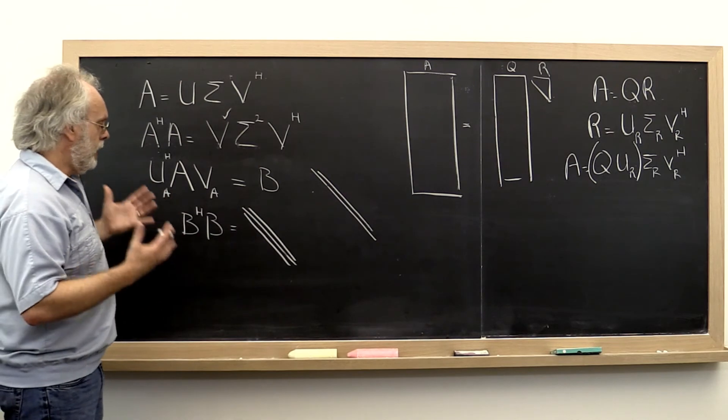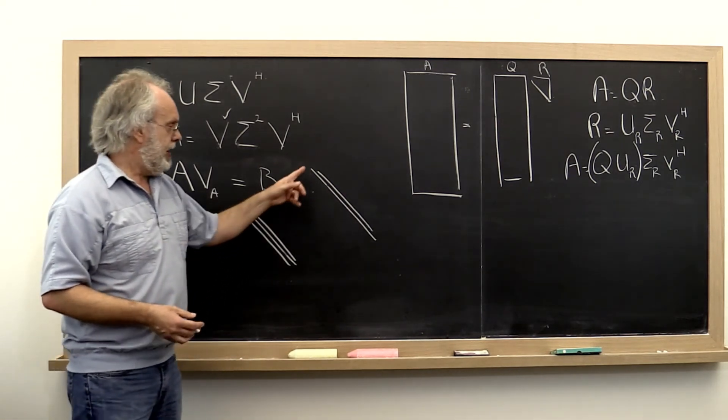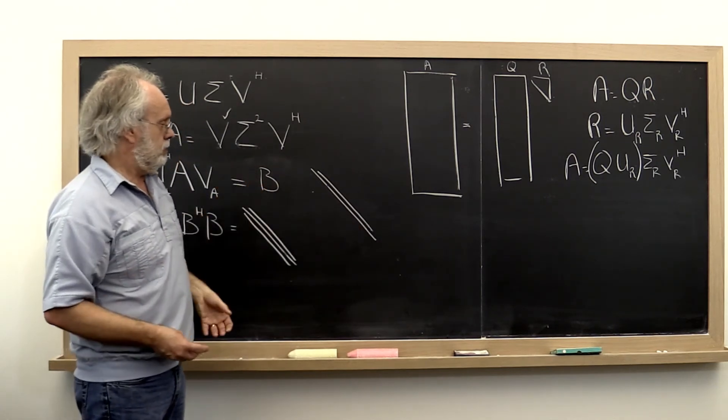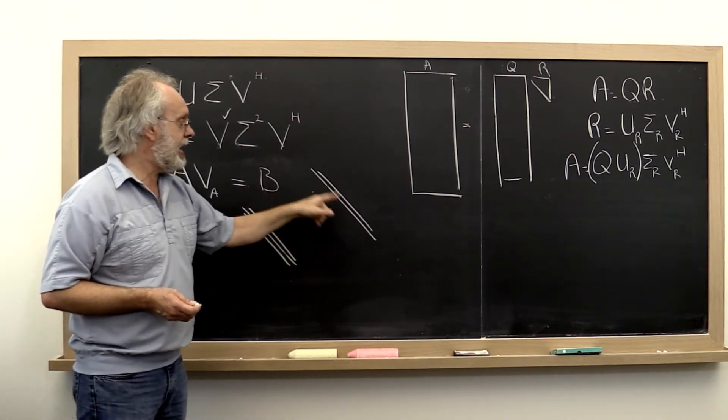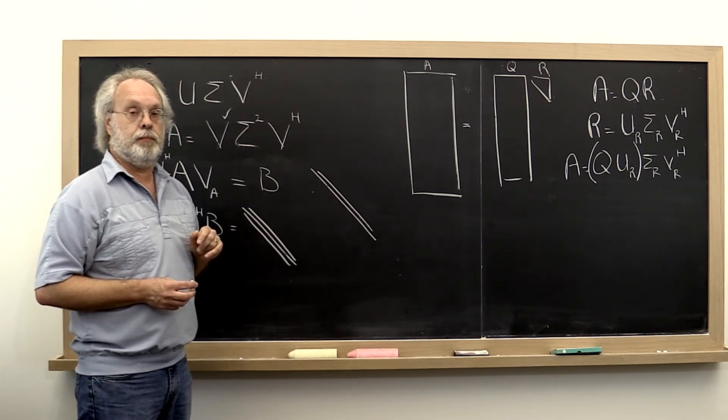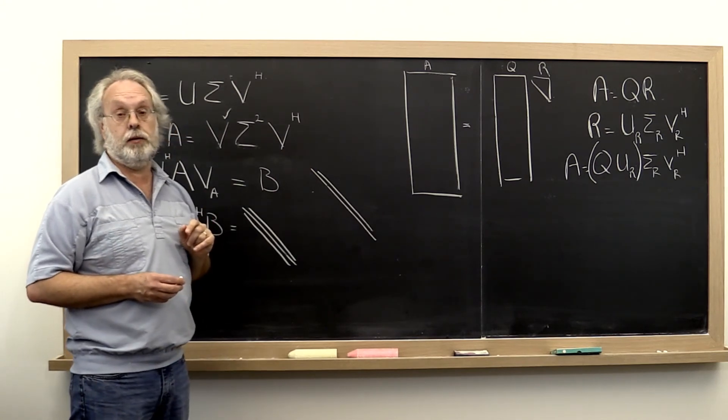So the question now becomes, can we somehow come up with a QR-like algorithm? As a matter of fact, a QR algorithm, but for the bidiagonal matrix, where the purpose is to compute the singular value decomposition.